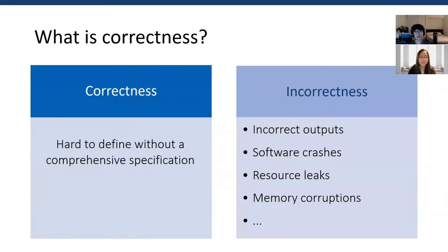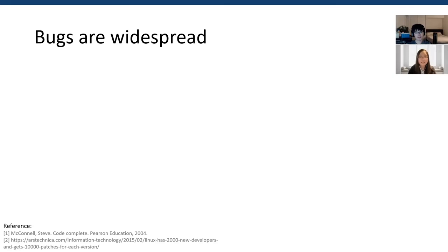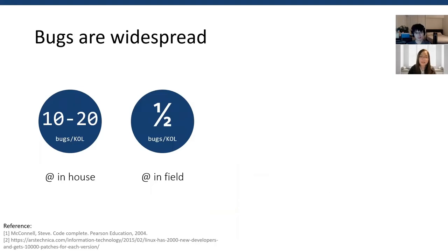Bugs are widespread in software systems. The number of bugs increases quickly as the code base size increases, which inevitably increases the burden of software development. Bugs appear both in in-house testing and release code. Take Microsoft applications as an example: it has 10 to 20 bugs per thousand lines of code during in-house testing. However, even with thorough testing, bugs still remain in release products, reduced to about half a bug per thousand lines of code.